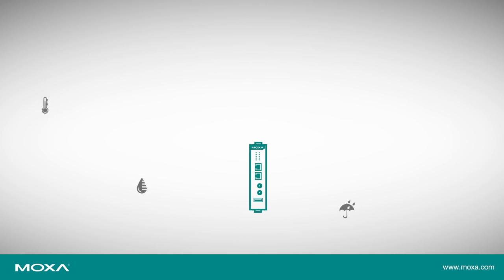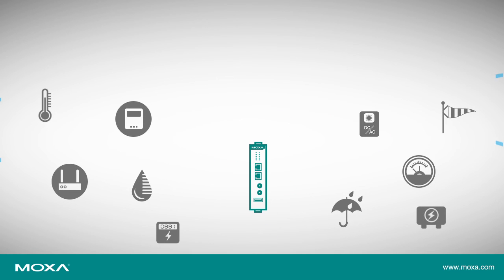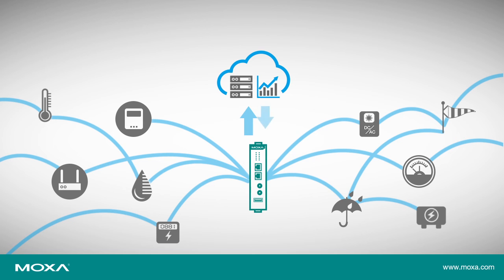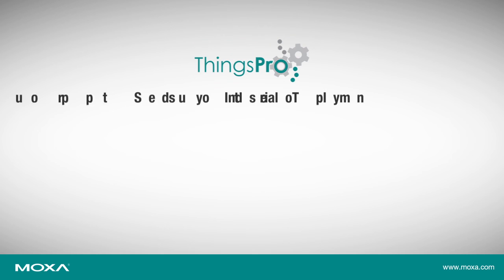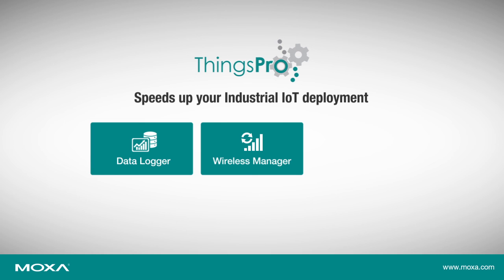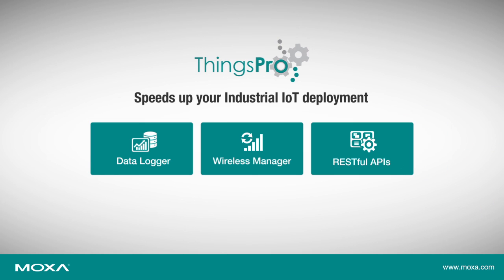Moxa's industrial IoT gateways come pre-installed with ThingsPro, an integrated data acquisition and device management software suite. ThingsPro consists of a data logger for easy data acquisition, a wireless manager for 4G LTE connectivity, and RESTful APIs for easy access to gateway configuration.